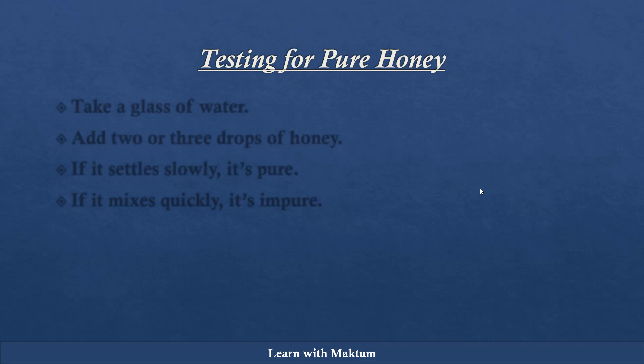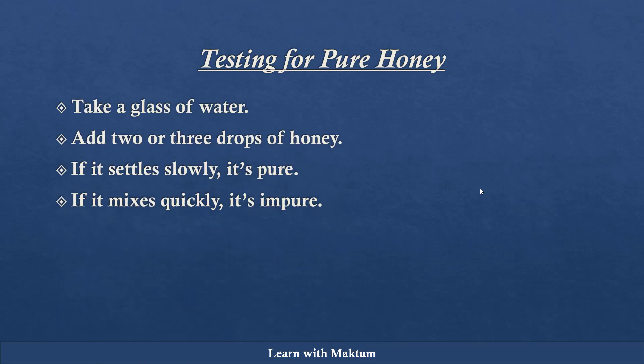Now, studying the honey concept, there is something called pure honey and impure honey. So how do you test honey whether it is pure or not? You can take a glass of water and add 2 to 3 drops of honey to it. When it settles down slowly with the water, it is called pure honey. If it mixes quickly with the water, it is impure honey.